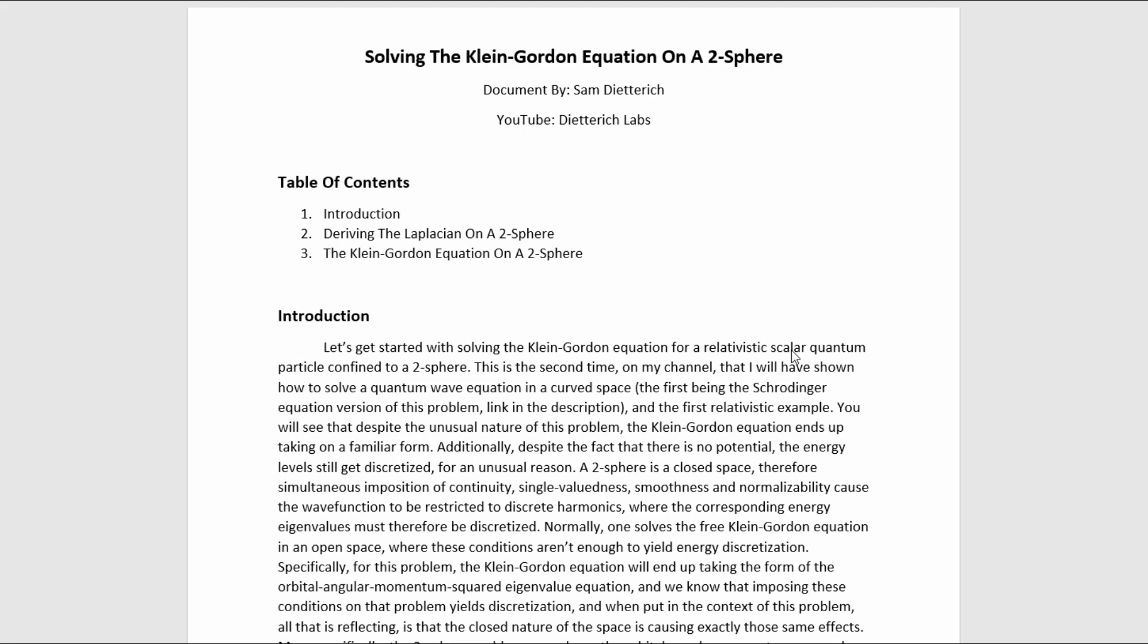Let's get started with solving the Klein-Gordon equation for a relativistic scalar quantum particle confined to a 2-sphere. This is the second time on my channel that I have shown how to solve a quantum wave equation in a curved space, the first being a Schrodinger equation version of this problem. There's a link to that video in the description, and it's the first relativistic example of such a problem that I've presented on my YouTube channel. You will see that despite the unusual nature of this problem, the Klein-Gordon equation ends up taking on a familiar form.